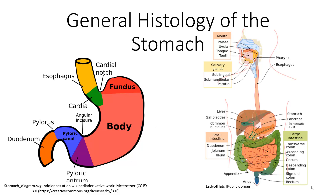Just in case you haven't had anatomy or you haven't had anatomy in a hot minute, just a reminder: the stomach is this pouch-like extension of the alimentary canal and it's located mostly to the left of the midline in the superior portion of the abdominal cavity. The stomach can be divided into four primary distinct regions.